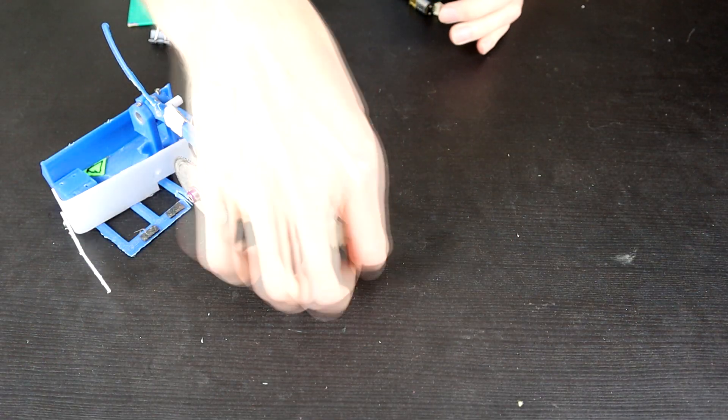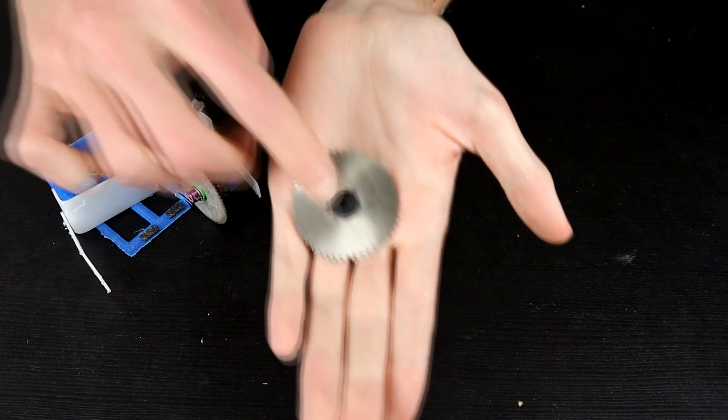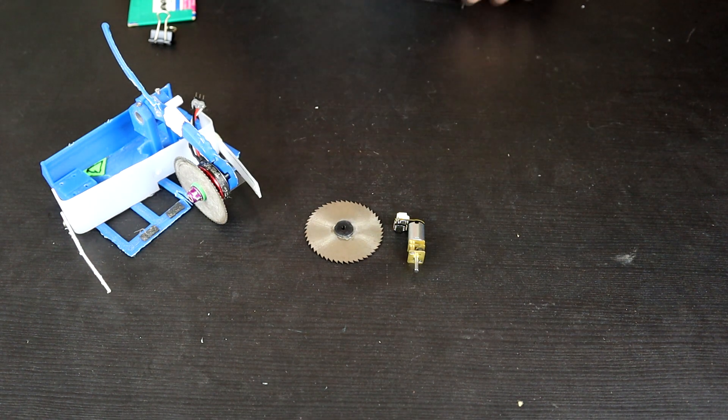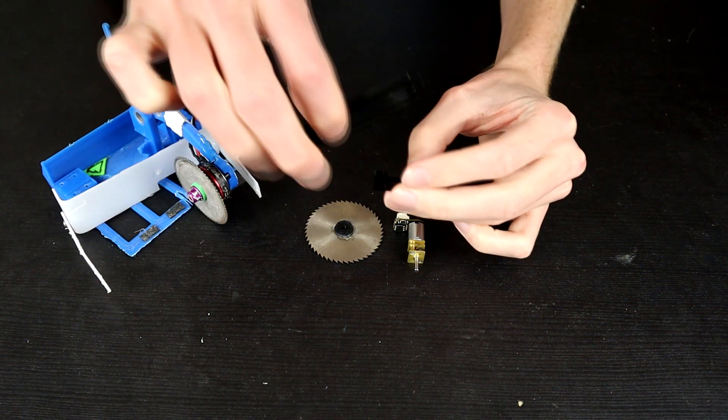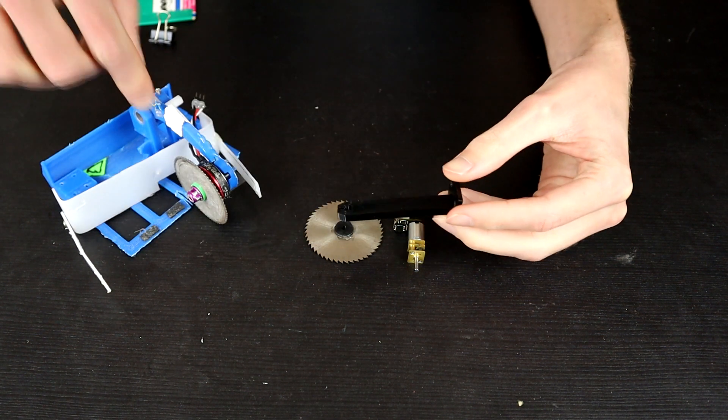So here's my idea: the big tooth saw blade with a brand new hub on it which has a D-shaft in it, a 30 to 1 N20 with a DF Robot motor ESC on the back.